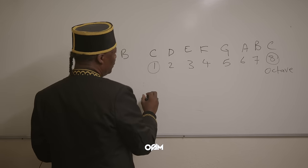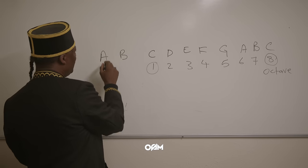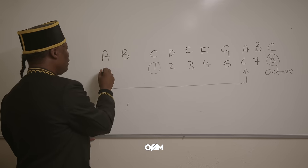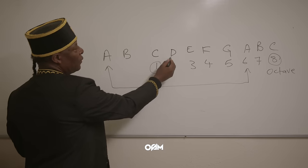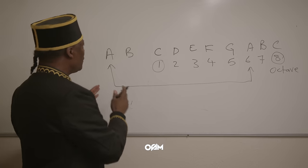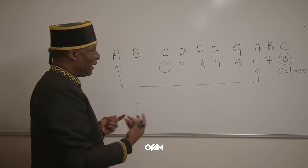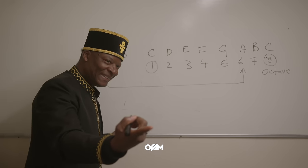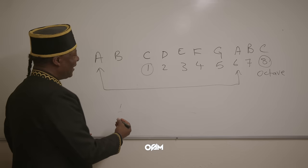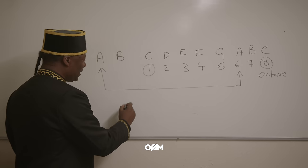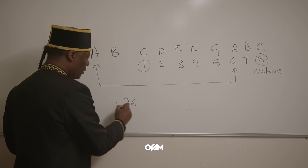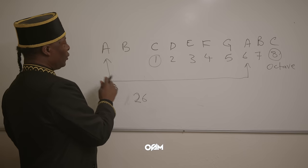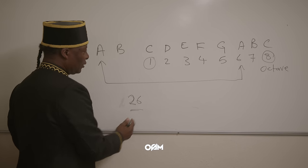When you look at the keyboard, you can start anywhere. We could go from A to A and that still gives you eight notes. We start on A because people are used to the English alphabet which has 26 letters — most children learn it by age two or three. The musical alphabet only has seven letters, so if you can learn 26 at two years old, you should easily learn seven.